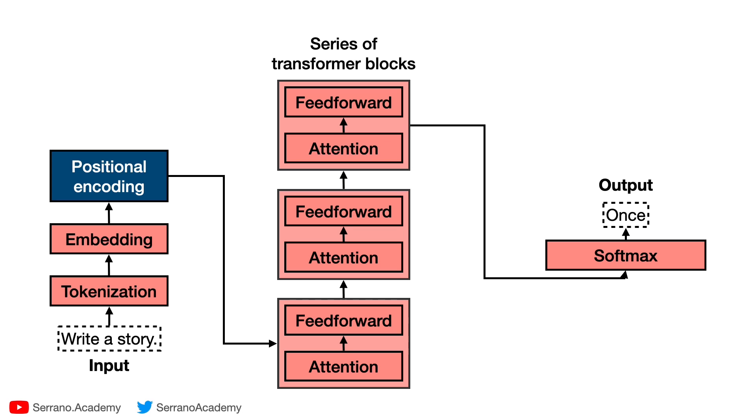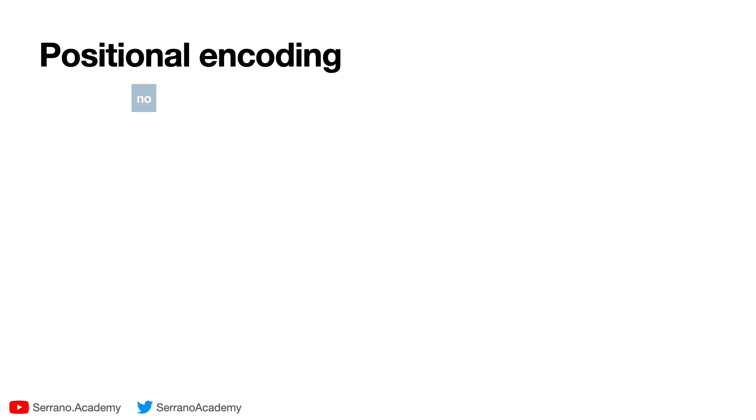The role of positional encoding is to tell the transformer model what is the order that we're giving it. And why is this important? Well, let's say we tell the transformer the sentence 'no it is good' and then we tell it 'it is no good.' These sentences have the exact same words, however they have completely opposite meanings, and the transformer needs to know that they're different.